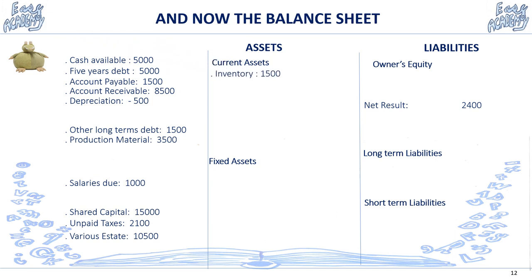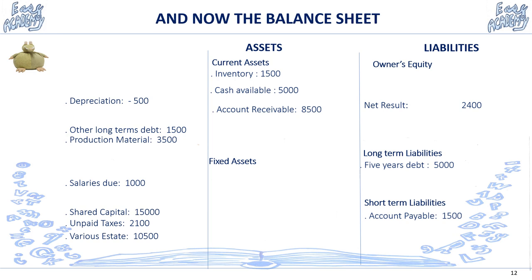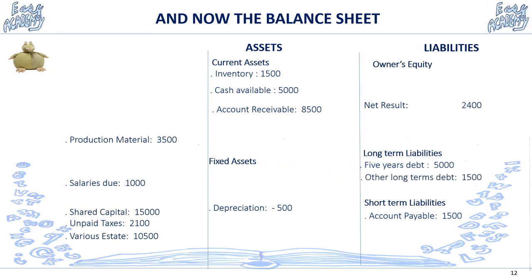Inventory is a current asset: 1,500. Cash available is a current asset: 5,000. A five-year debt is a long-term liability: 5,000. Accounts payable — what you owe to suppliers — is 1,500. Accounts receivable — what partners of the company owe you — is 8,500. Depreciation is 500; this time you deduct it from the fixed assets. Other long-term debts are a long-term liability: 1,500. Production material already bought for production is a fixed asset: 3,500.